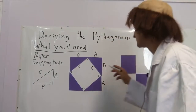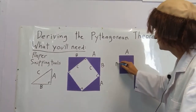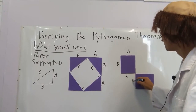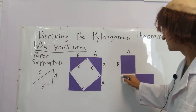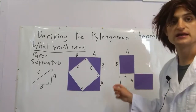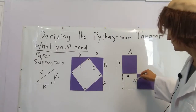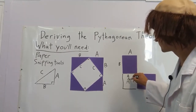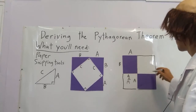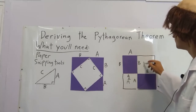Now what we do to this side: this is A, this is B, this is A, and another A. We can fill out this shape. This, as you'll notice, is a square with sides A — A times A. This is A squared. This we can fill out as well: B, B — B squared.